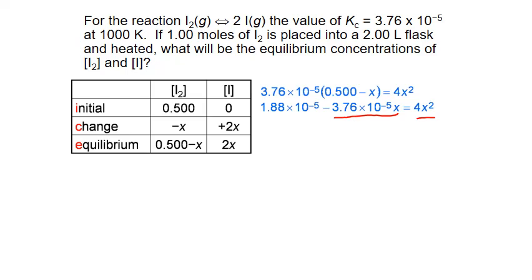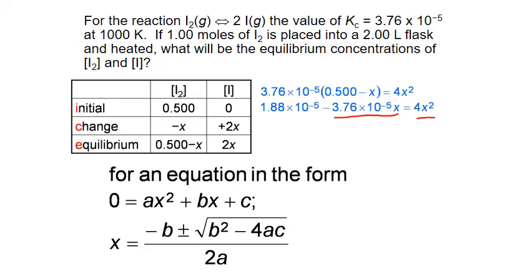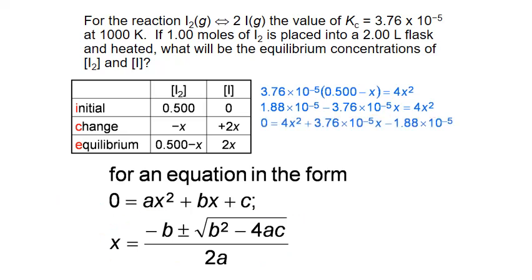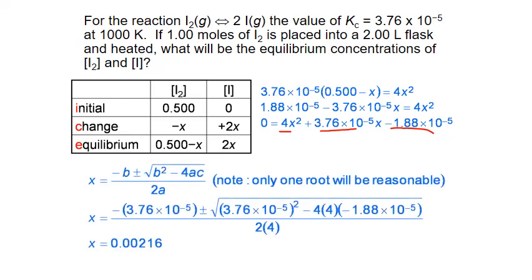We use the quadratic formula to solve for X. We rearrange everything to one side equal to zero, identify coefficients A, B, and C, and substitute into the quadratic formula. Of the two roots, only one is physically reasonable. The reasonable root gives X equals 0.00216 moles per liter.